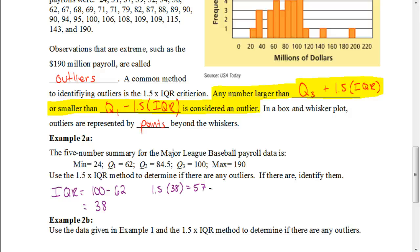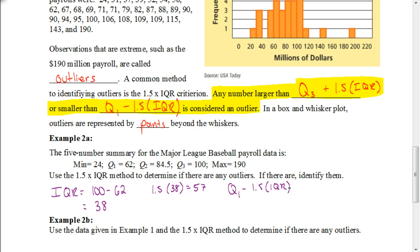That means if we have any points that are 57 units beyond Q3, or any values that are more than 57 less than Q1, those are going to be outliers. For the lower end, we take Q1 minus 1.5 times the IQR: 62 minus 57 gives us 5. Any value less than 5 would be a lower end outlier — but our smallest number is 24, so there are no lower outliers.